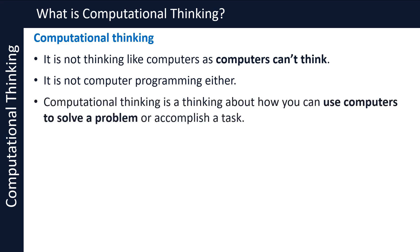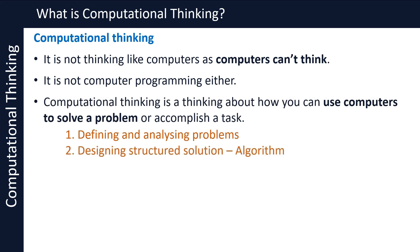Computational thinking is thinking about how you can use computers to solve a problem or accomplish a task. Solving the problem with computers involves three steps: defining and analysing problems, designing a structured solution using an algorithm, and implementing the solution using a computer program.